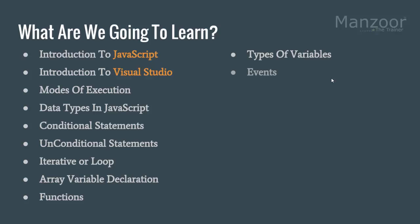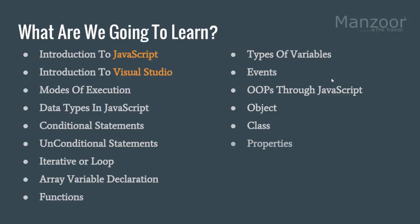Then we will try to understand various events — like mouse events, keyboard events, key press, key up, key down — we have various kinds of events. We will also explore object-oriented programming through JavaScript, because JavaScript supports concepts like object, class, properties, and methods. We will see how to implement these things in JavaScript, and we will also see list of objects and standalone objects.